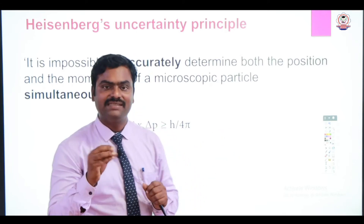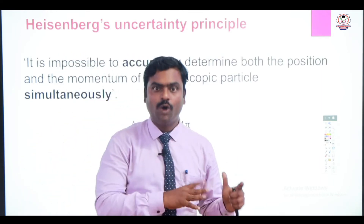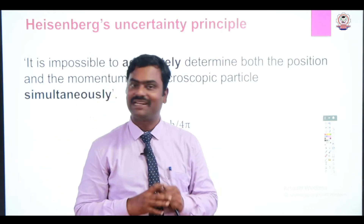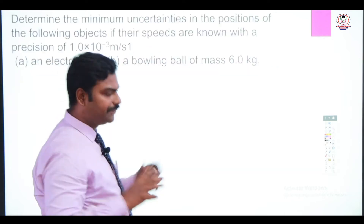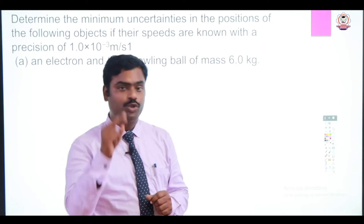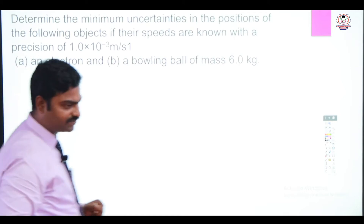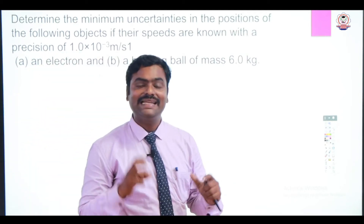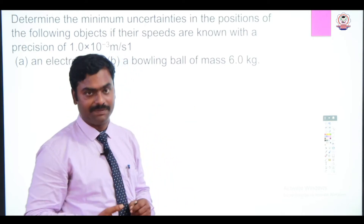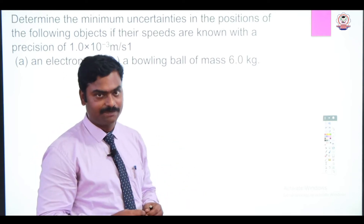What is the use of Heisenberg's uncertainty principle? It shows that microscopic and macroscopic particles behave differently. We are going to determine the error in velocity of two different particles — first for an electron, and next for a moving ball which has a mass of 6 kg. We are going to find out the error in velocity for both.